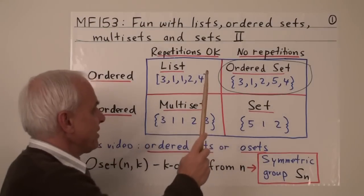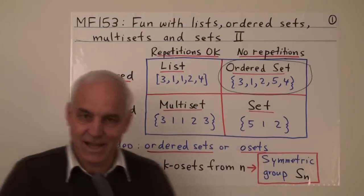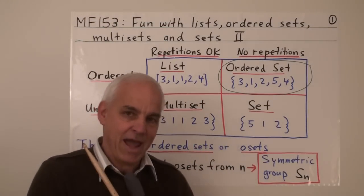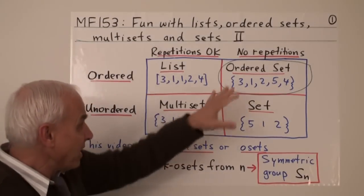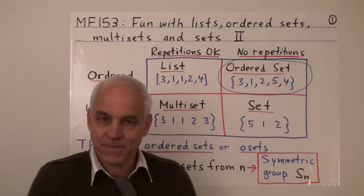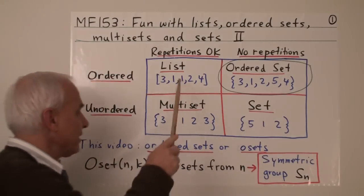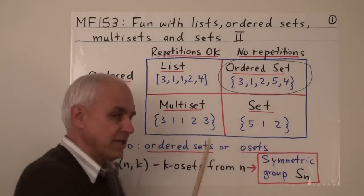There's four main kinds of data structures that we're going to be looking at: lists, ordered sets, multisets, and sets. Each of them has a self-contained beautiful theory and then they all end up interacting with each other a little bit later on. So in our last video we talked about lists. Today we're going to talk about ordered sets.